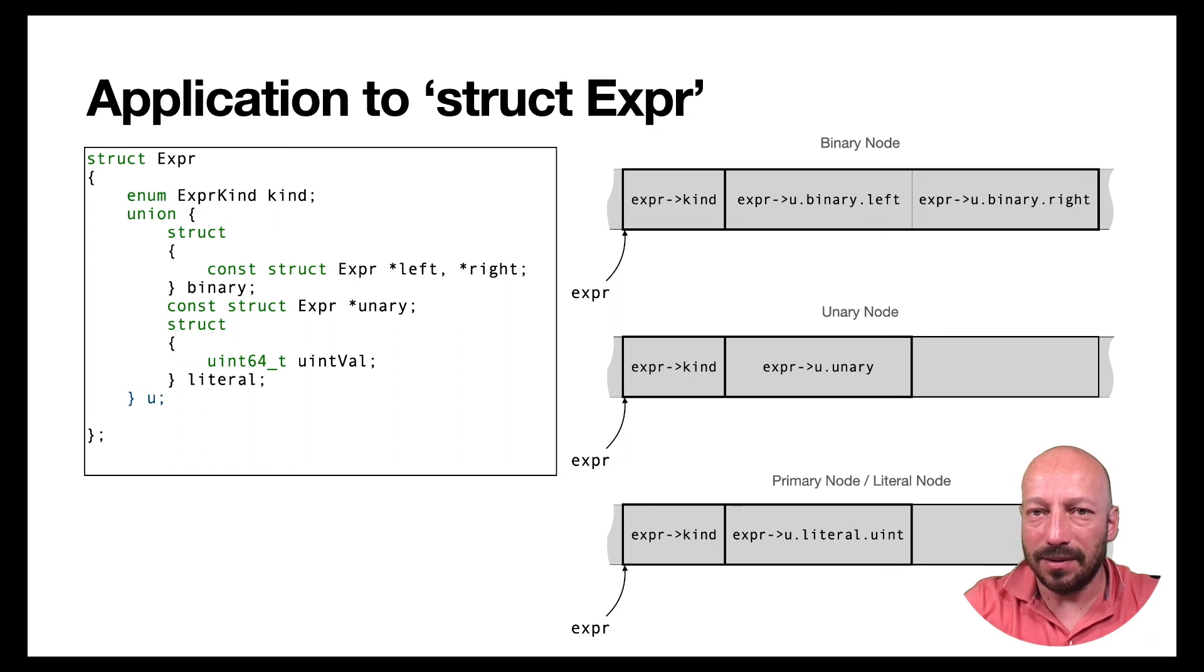And the same thing is, of course, true for the other cases. If you have a unary kind of node, then you anyway just access this member. And so why not use the same memory that was previously unused? You even can make this notation a bit nicer. This union member has a name U. That's why you always have to use U dot binary, U dot unary and so on.